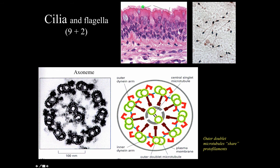In pseudostratified columnar epithelium you can see cilia on the surface, with the plasma membrane surrounding each cilium around the axoneme, just as the plasma membrane surrounds the sperm tail flagellum. The axoneme has 9 outer microtubule doublets — one member is a complete tubule with 13 protofilaments, while the other is a partial tubule sharing protofilaments with its partner. There are inner and outer dynein arms, linking proteins in the middle, and a central doublet each with 13 protofilaments — giving the 9-plus-2 arrangement.